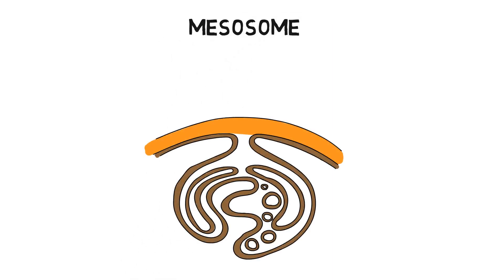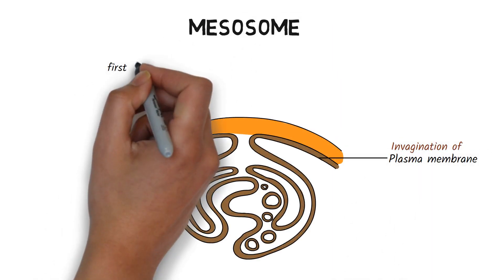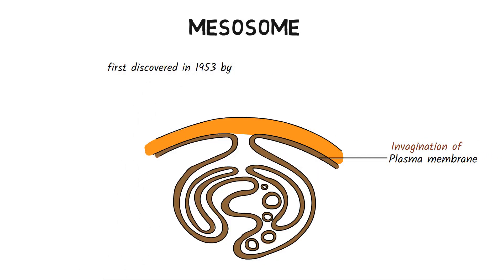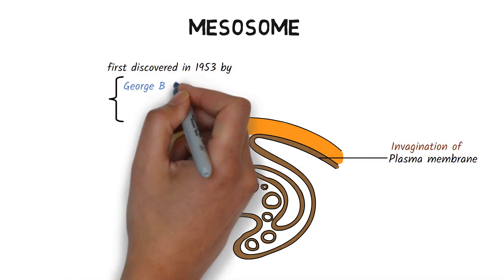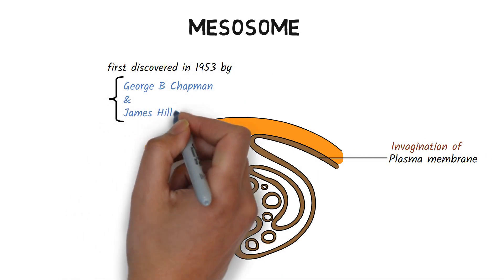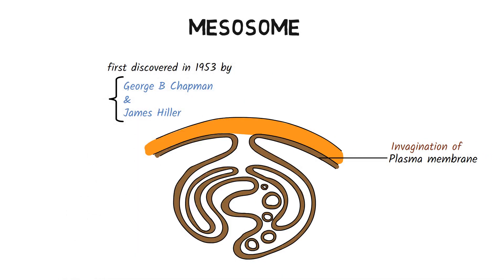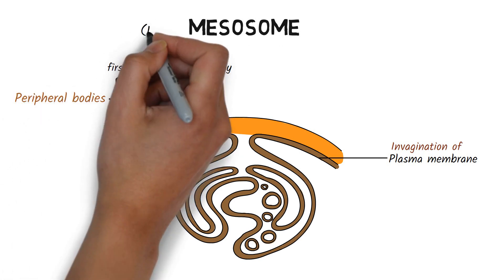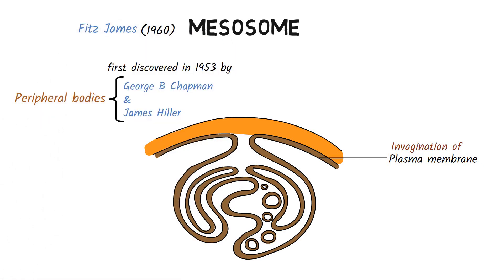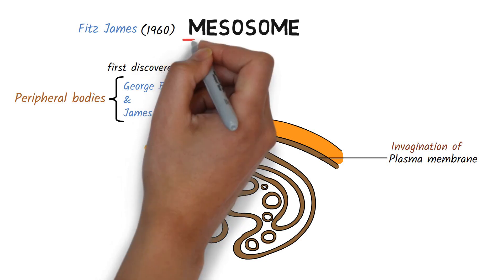Mesosomes are the invaginated structures of plasma membrane. They were first discovered in 1953 by George B. Chapman and James Hiller, who referred to them as perifural bodies. Later, in 1960, Fitz James termed them as mesosomes.